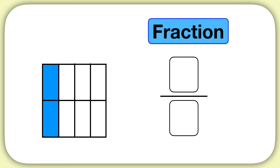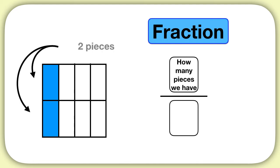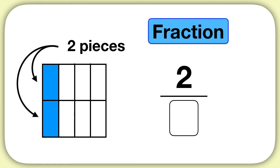Let's practice another one together. Let's figure out what fraction of this rectangle is shaded. What number should go on top of the line? Remember the number on top of the line is how many pieces we have shaded. In this figure, we have two pieces shaded, so we'll put a number 2 above the line.